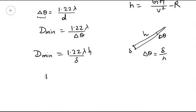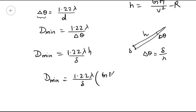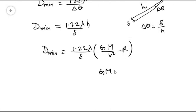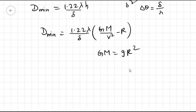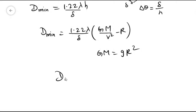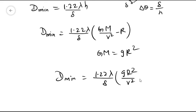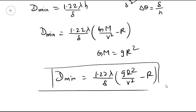Substituting the value of h, we get d minimum equals 1.22λ/delta × (GM/v² − R). Since GM = gR², the final answer is d minimum equals 1.22λ/delta × (gR²/v² − R). This is the correct answer.